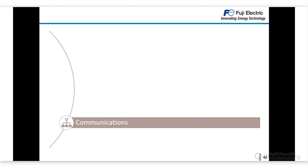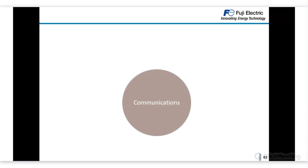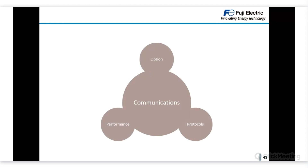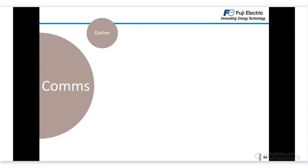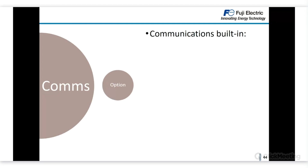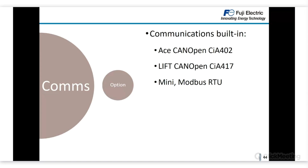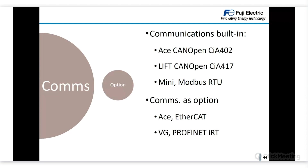Moving to the sixth category — communications. Important points include whether communications are built-in or optional, which protocols are available, and communication performance. All our inverters have built-in communications — CANopen for ACE and LM2A, and Modbus RTU serial communication for the others. As an option, we can expand communication capabilities with option cards — for example, an EtherCAT card for ACE or PROFINET IRT for VG.